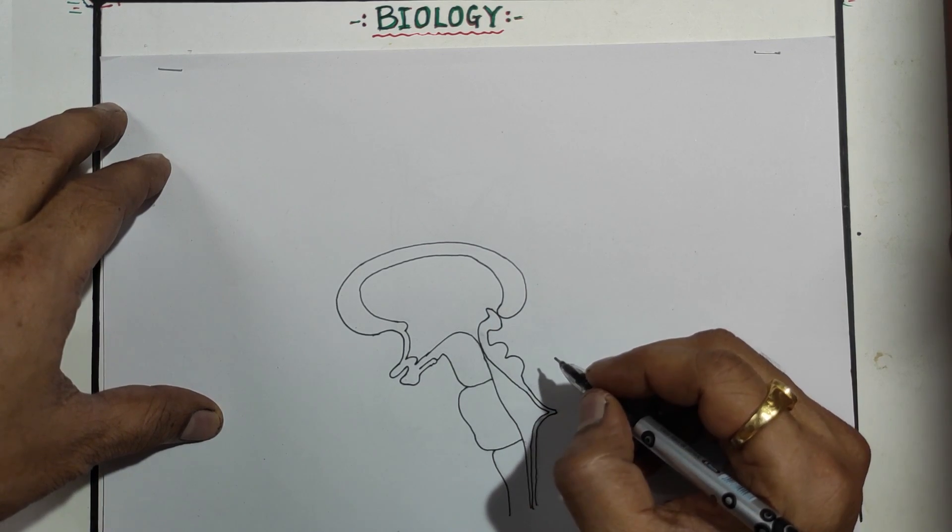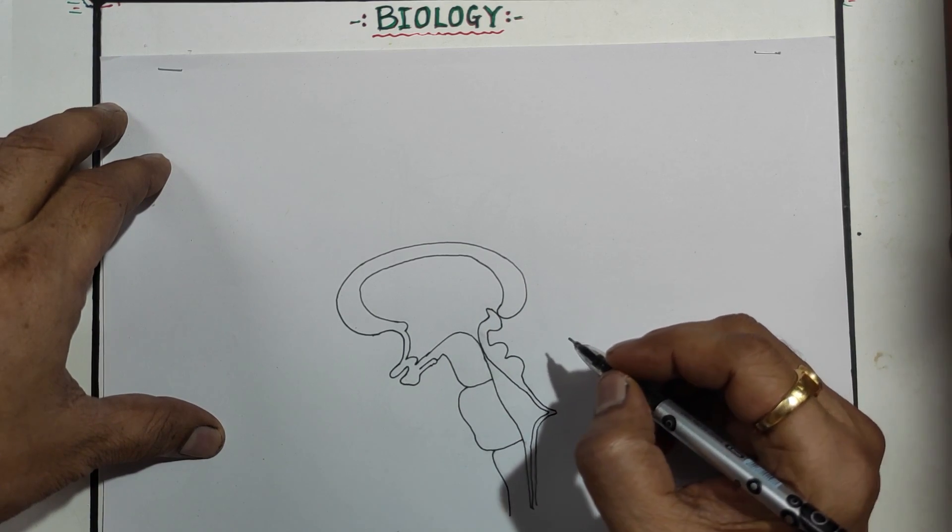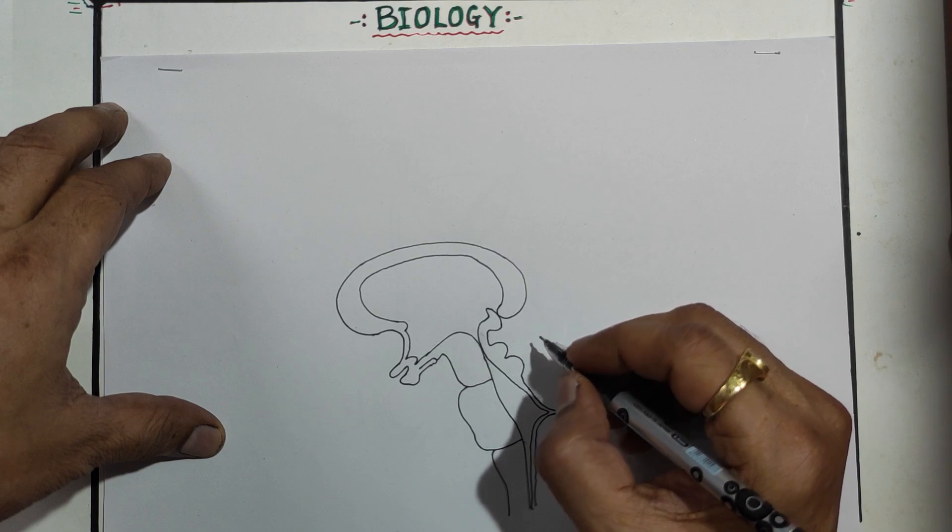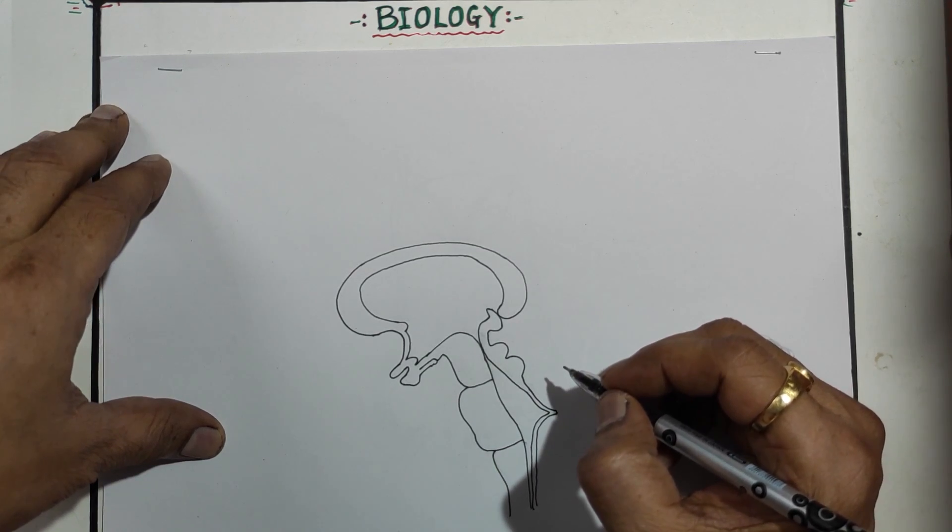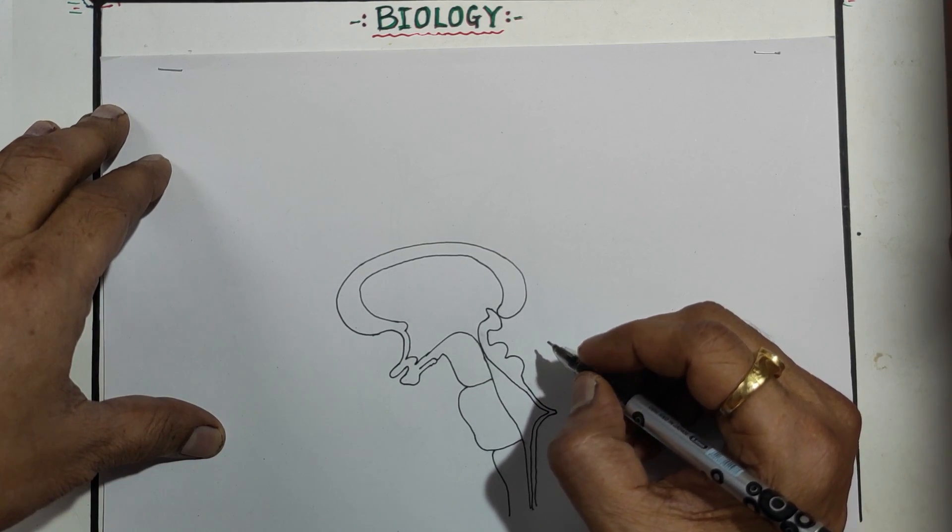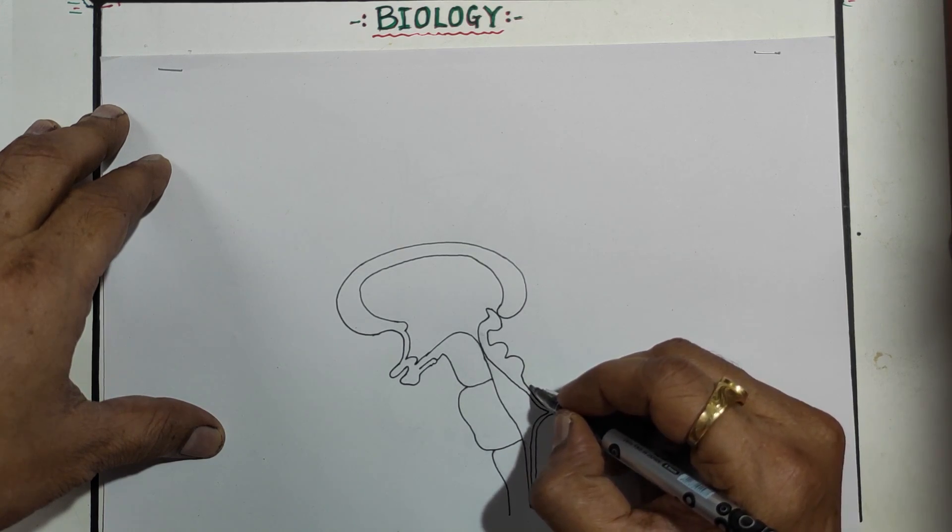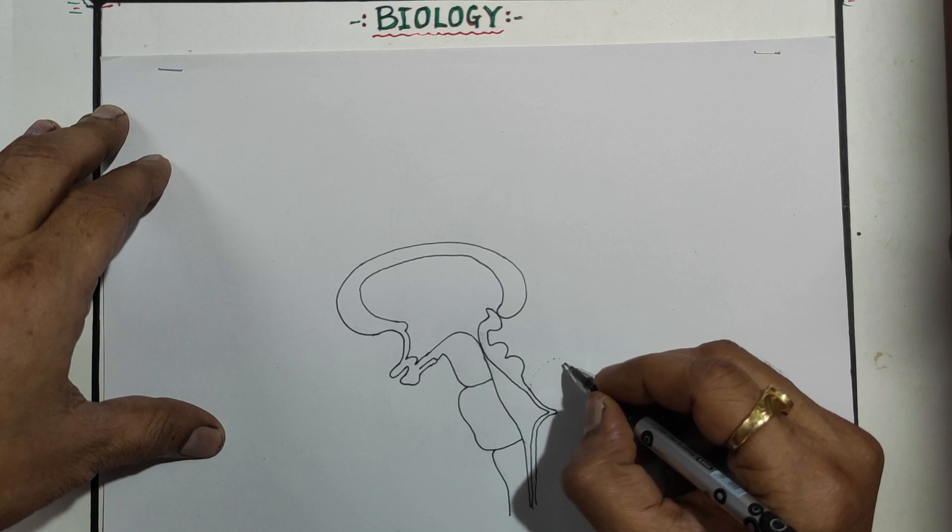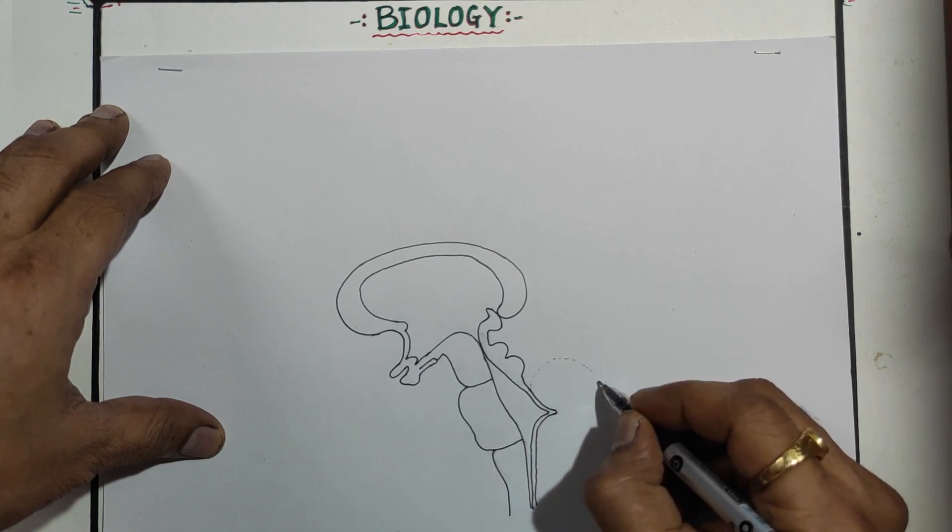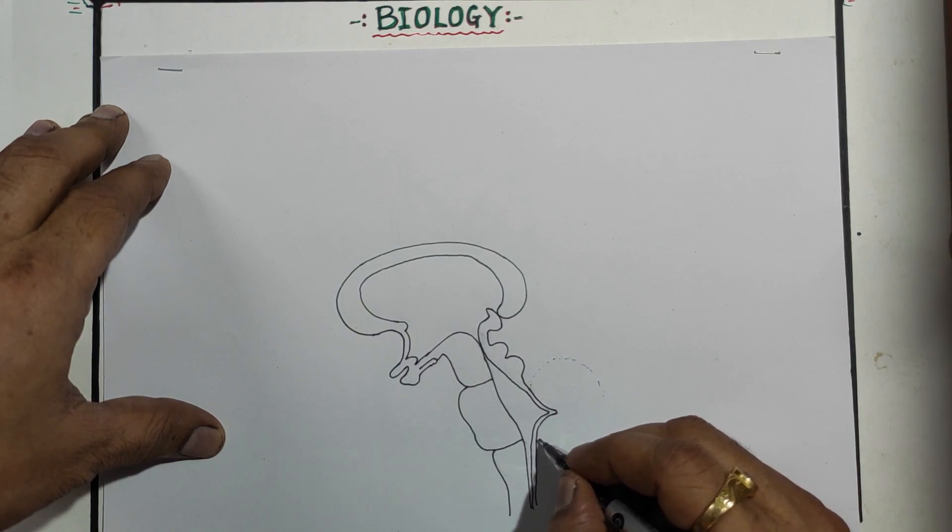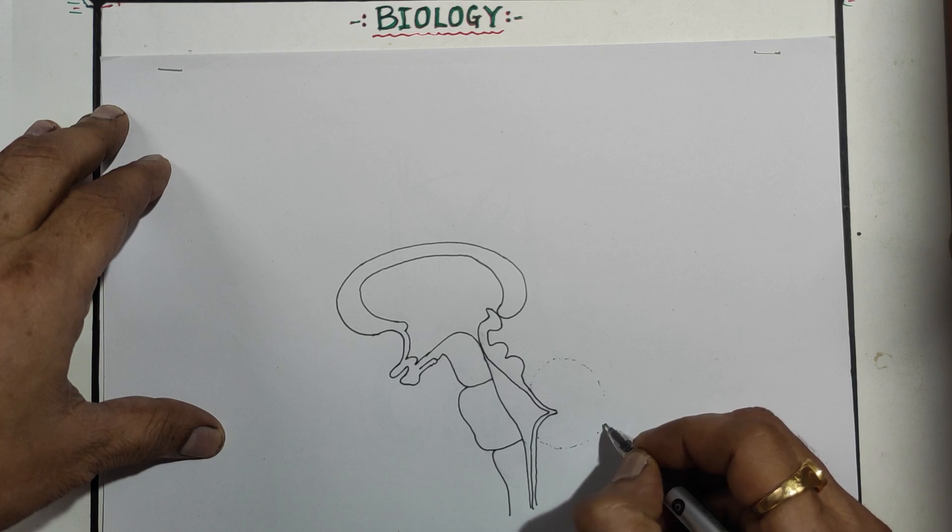Now here next you have to draw the cerebellum. Before that we'll draw the arbor vitae. So just see the proportion, somewhat like that structure. Make a small dotted line like that.